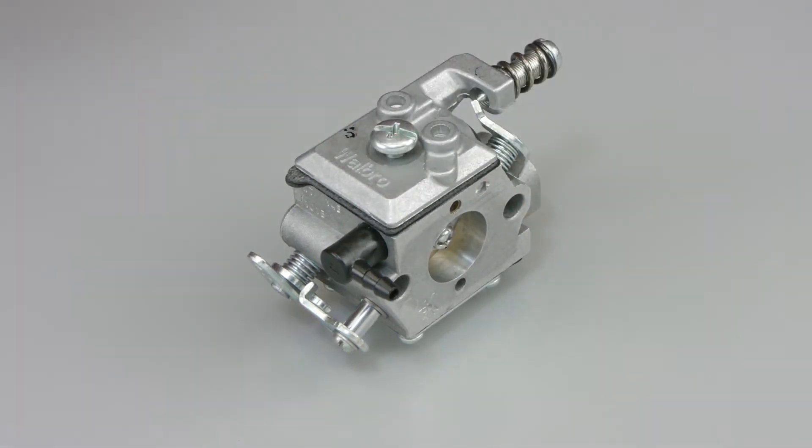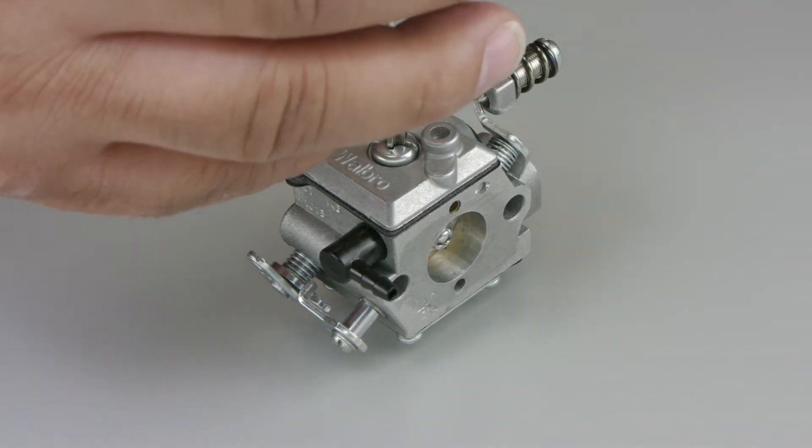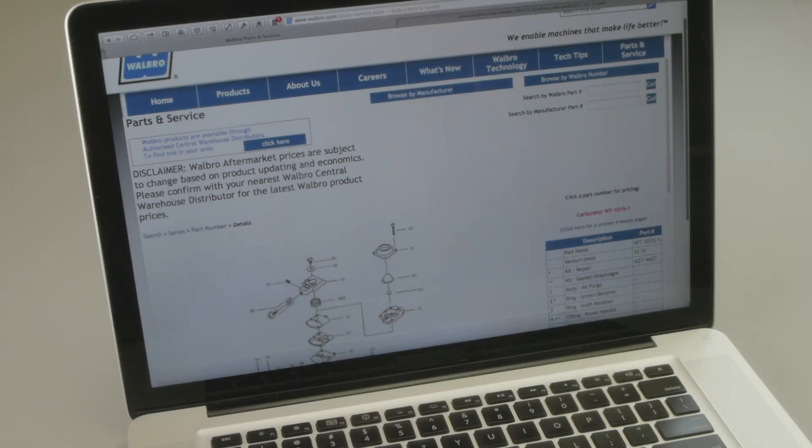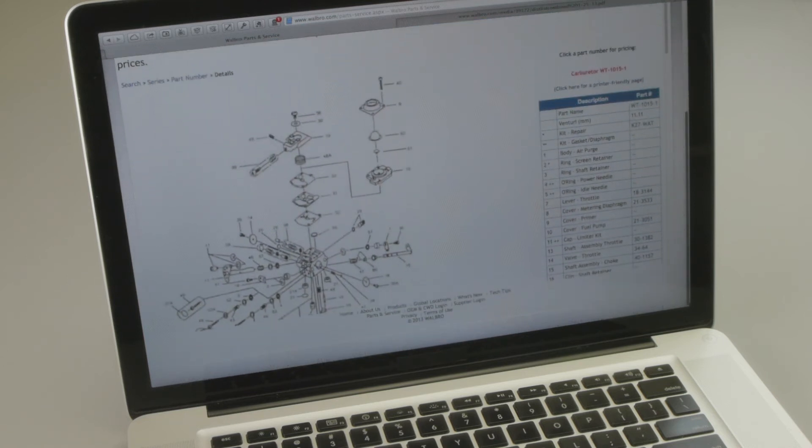If any of the carburetor components are damaged, replace them with original Walbro parts. A generic exploded view and a list of all the carburetor specific parts can be found at Walbro's website on www.walbro.com.